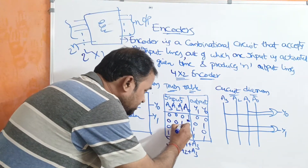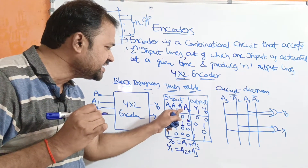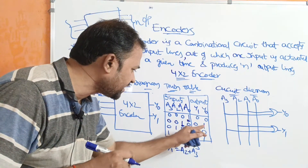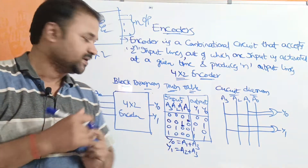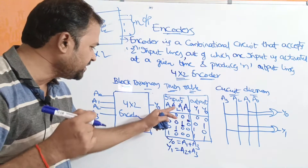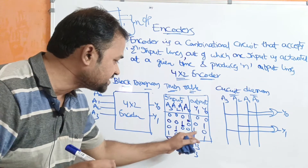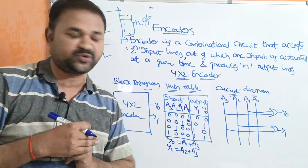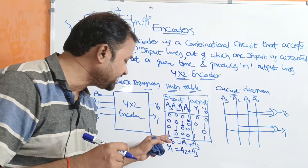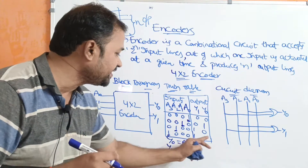If the inputs are 0010, meaning A1 is activated and the remaining 3 are inactive, the output is 01. If the inputs are 0100, meaning A2 is activated and remaining inputs are 0, the output is 10. If the inputs are 1000, meaning A3 is activated and remaining inputs are 0, the output is 11.